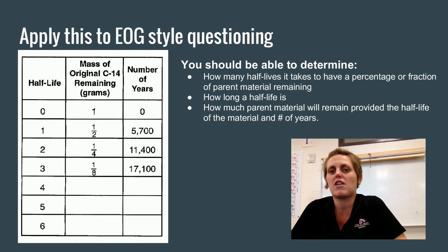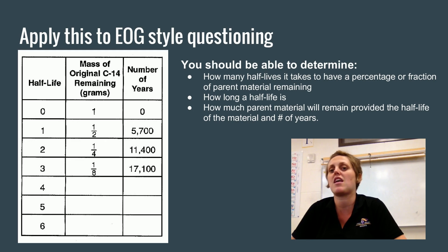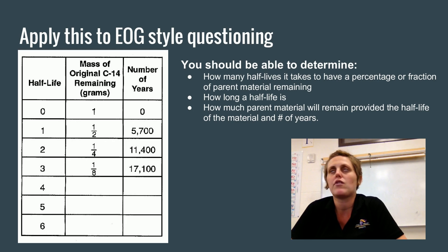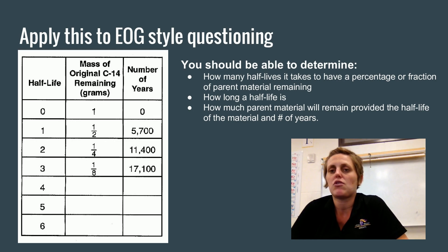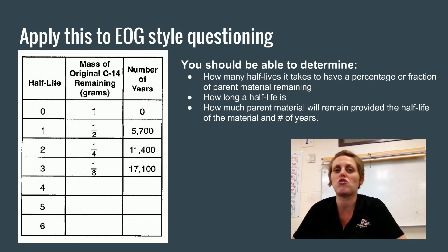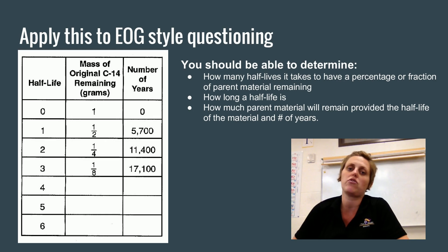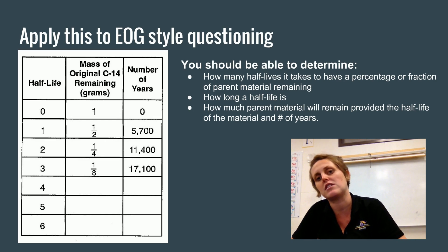Applying this to EOG-style questioning: from any given amount, you should be able to tell how many half-lives it takes to have a percentage or fraction of parent material remaining. If you assign an amount of one as your default original parent material, after one half-life you'll have a half, after two you'll have a quarter, after three you'll have an eighth, after four you'll have a sixteenth, and so on and so forth.